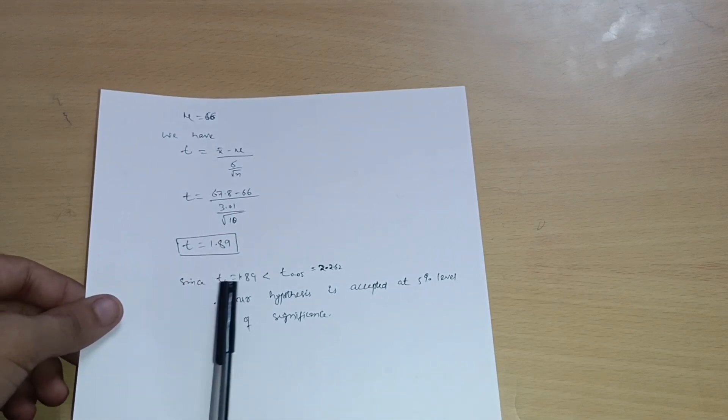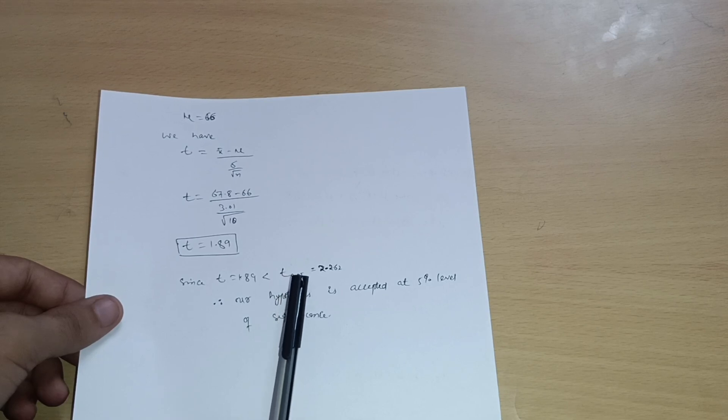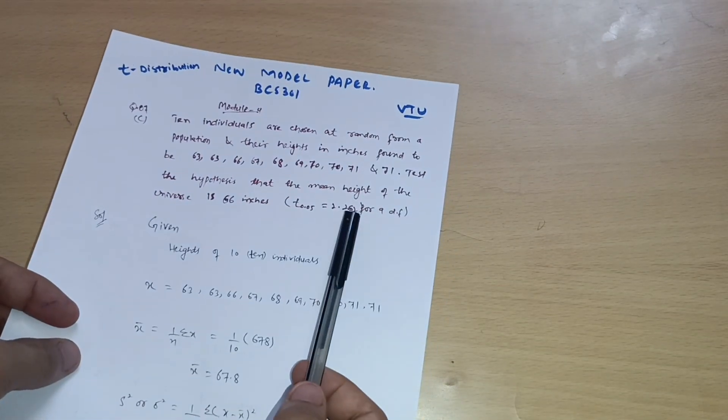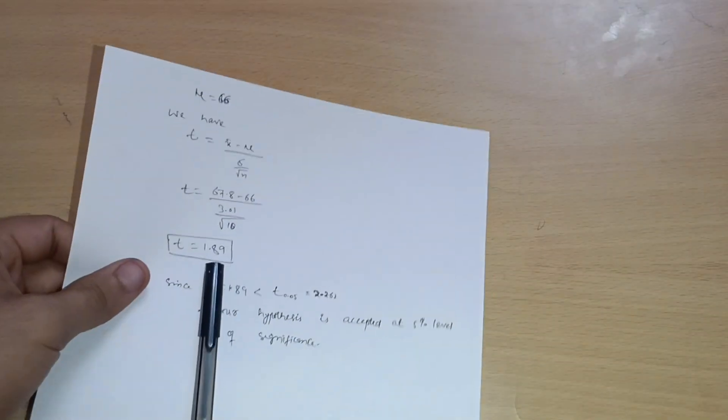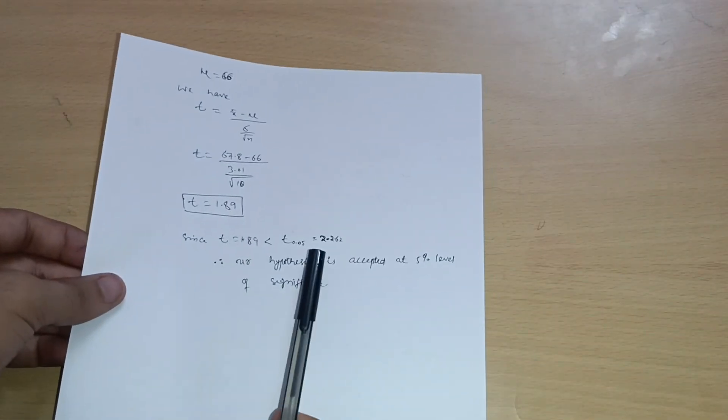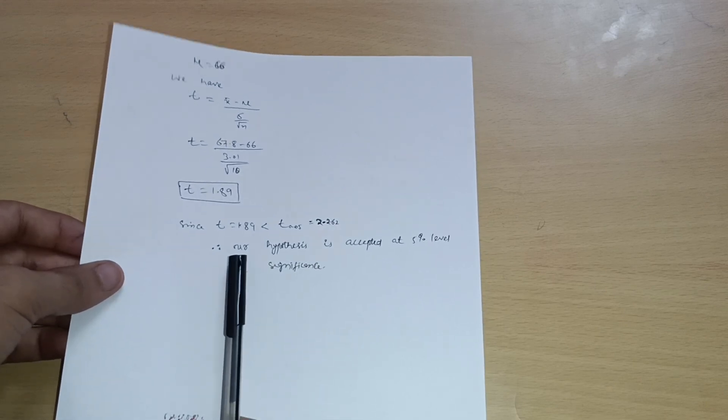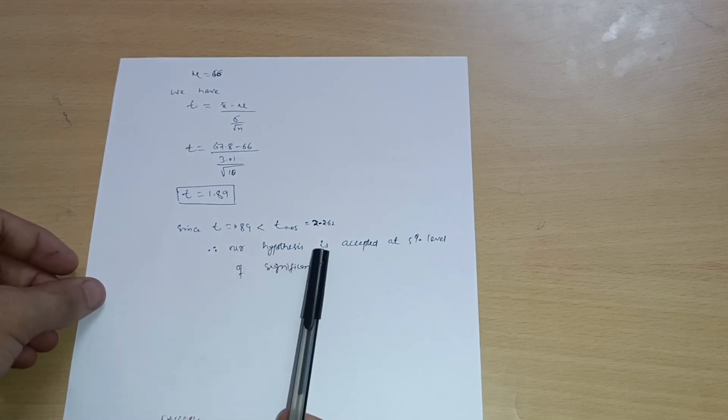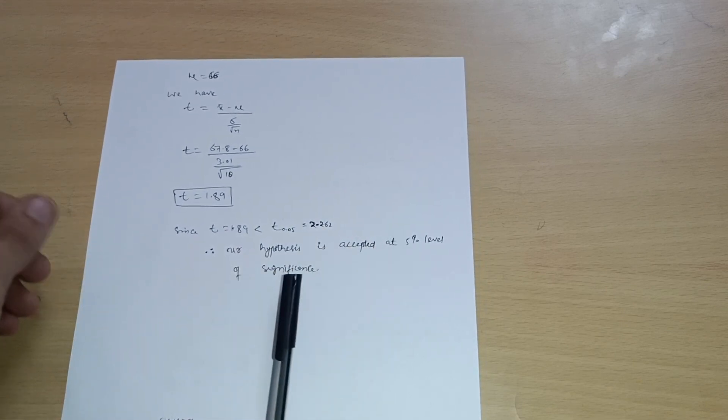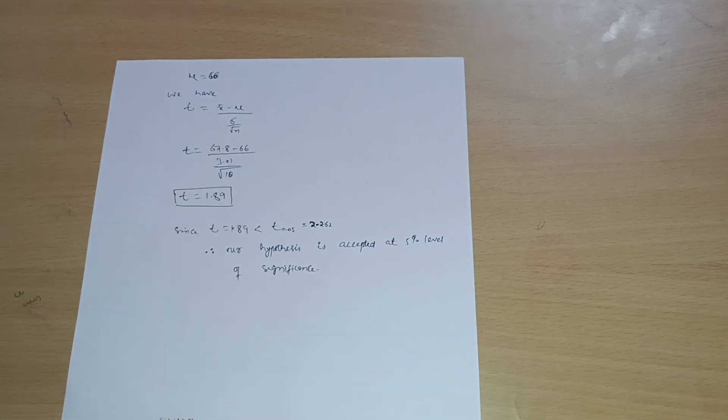So we can write down, since t is equal to 1.89 is less than t at 0.05 or 5 percent level of significance is equal to 2.262. But we are getting the value 1.89, so it is less than 2.262. We can write down in the conclusion that our hypothesis is accepted at 5 percent level of significance. So this much is the answer for this particular question.